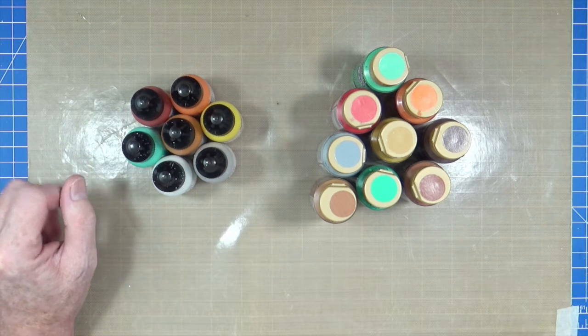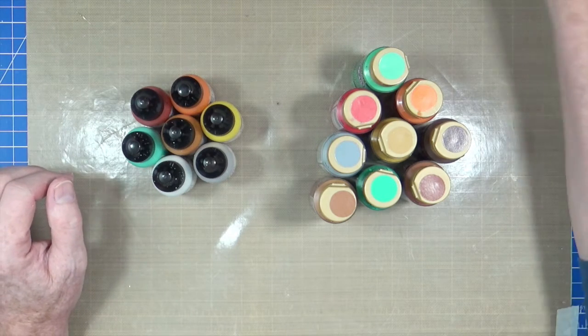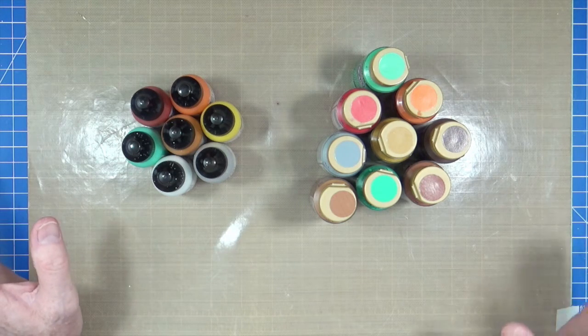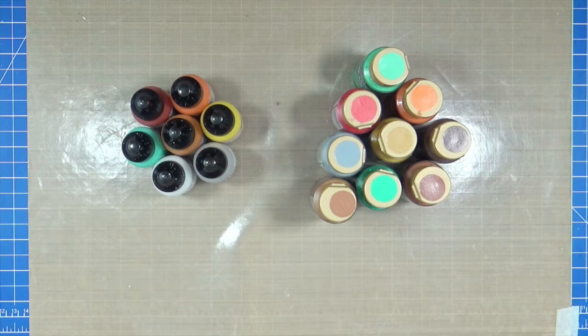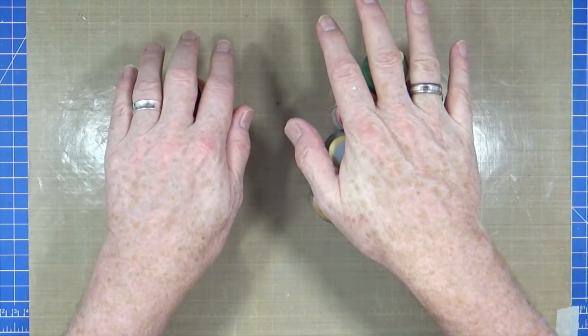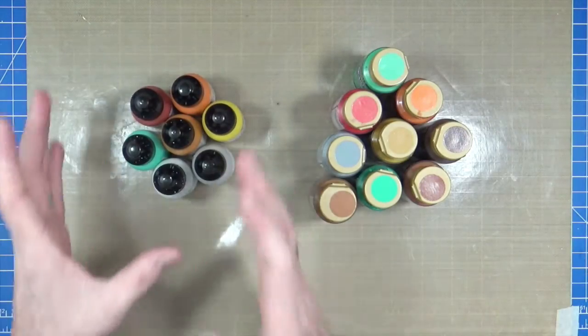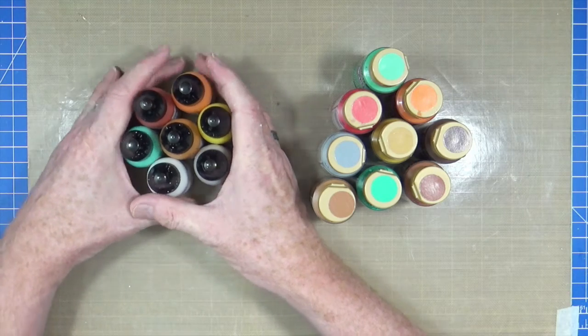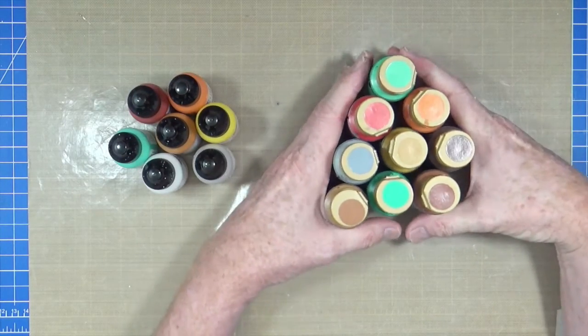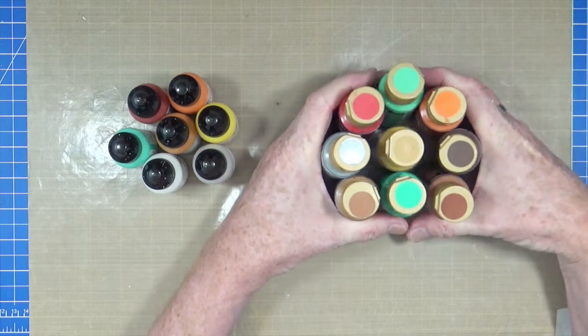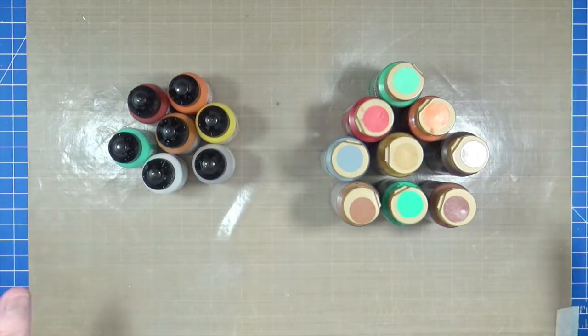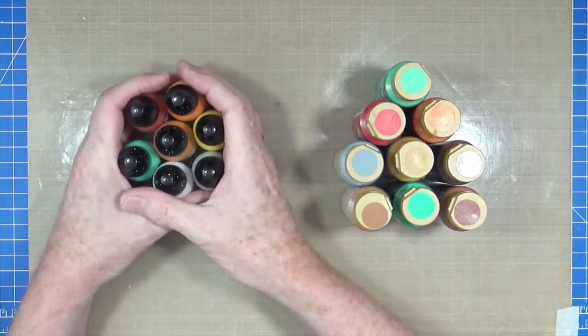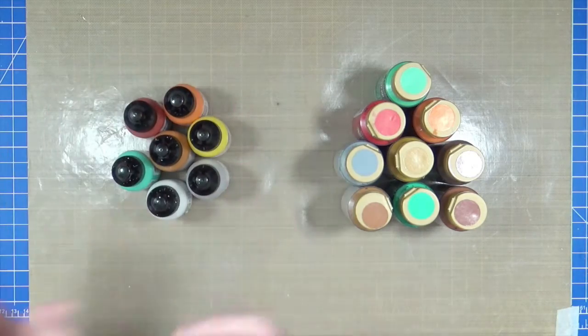Anyway, so I mentioned last week that I would show you how I create my steampunk kind of rusty grungy backgrounds. So what I've done is I've just pulled out a selection of two sets of paint from my collection. This set of colors are from my Dina Wakely Media paint collection and this set of paints are from my DecoArt Americana paint collection.